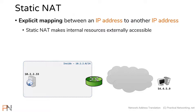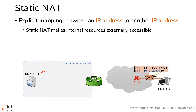If this is all you have, when this host tries to send a packet to the destination of 10.2.2.33, that packet will be dropped on the internet. Remember, there's a rule on the internet that says the only communication that can work on the internet is public IPs to public IPs. Since this packet includes a private IP address, this packet will be dropped as it crosses the internet.